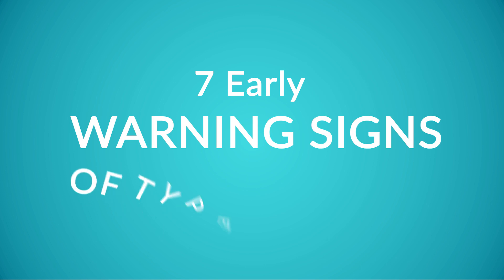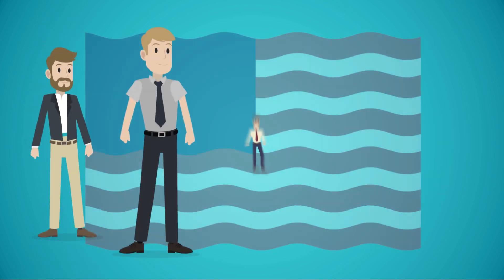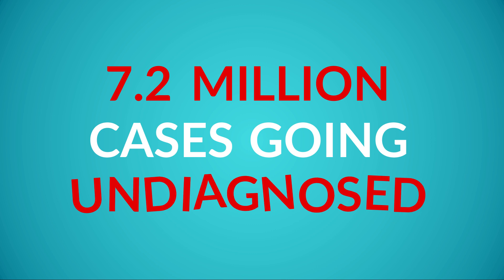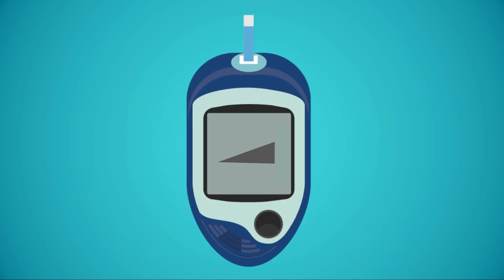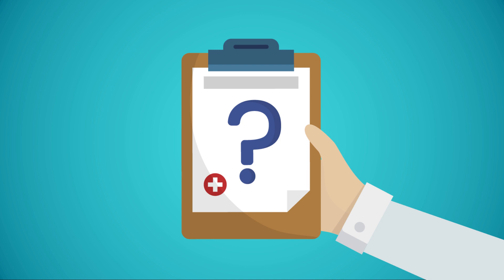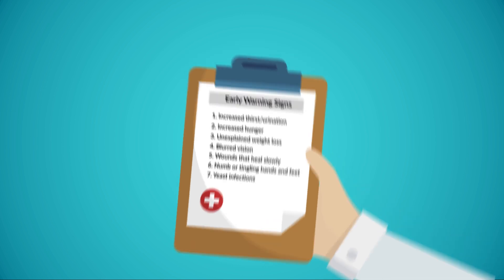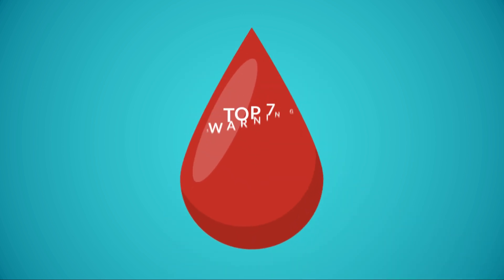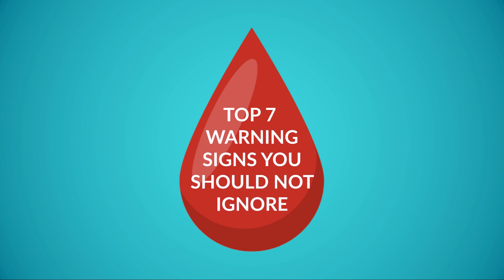7 Early Warning Signs of Type 2 Diabetes. Diabetes affects 30.3 million Americans a year, with an estimated 7.2 million cases going undiagnosed. It's often called the silent killer, as the early symptoms of the disease are easy to miss and can often go undiagnosed. Recognizing the early warning signs will help you to begin managing your diabetes that much sooner. Here are the top 7 warning signs you should not ignore.